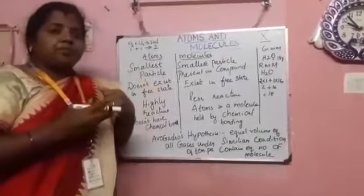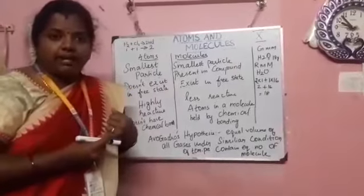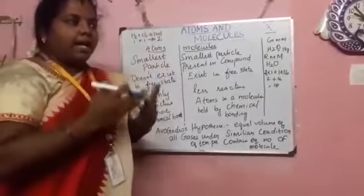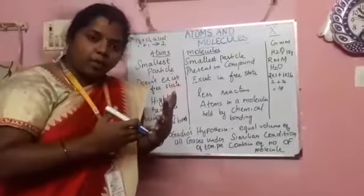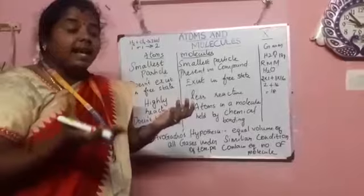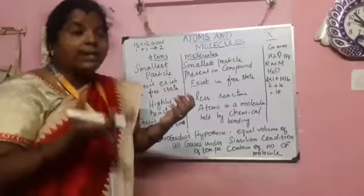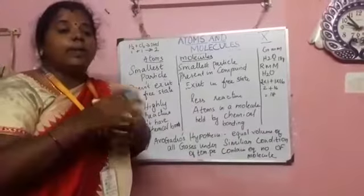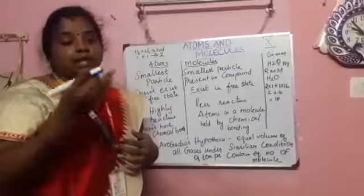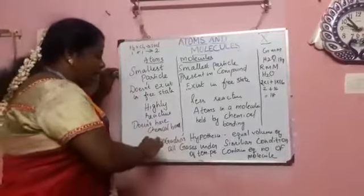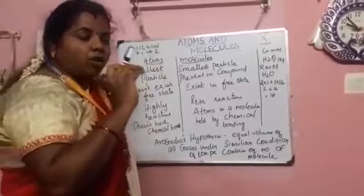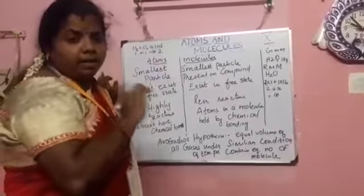In this lesson we saw the definition of atom, the definition of molecule — a combination of atoms. We covered the difference between atoms and molecules, relative atomic mass, average atomic mass, why carbon is kept as the standard unit, gram molecular mass, and Avogadro's Law. The difference between atoms and molecules is a very important question, and numerical problems are also expected in this lesson. Thank you.